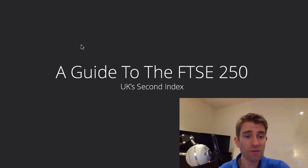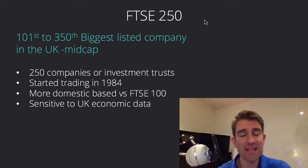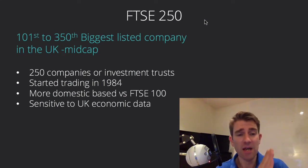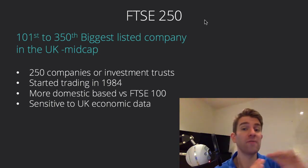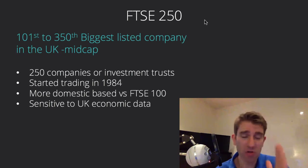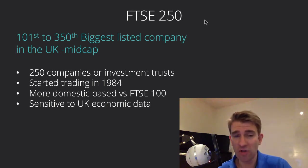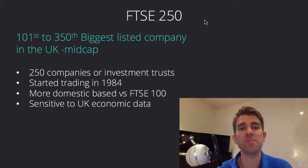The FTSE 250 is the Financial Times Stock Exchange 250 index. The FTSE 100 is the top 100 companies, and the FTSE 250 is the next 250 companies — so it takes it from the 101st to the 350th biggest listed companies in the UK.